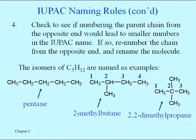Thus we call it 2-methylbutane — all one word, separating the number from the letters with a hyphen. The third isomer I previously identified as neopentane; that is a valid name, although it's not very systematic. The systematic name is 2,2-dimethylpropane, because only three of those carbons are in sequence and there are two branches both off the second carbon. Dimethyl means there are two methyl groups, and we use the twos twice to identify the location of both methyl groups even though they come off the same carbon. For other alkanes with more carbons or more branches, these same simple rules apply.